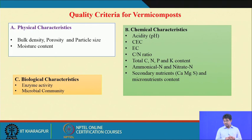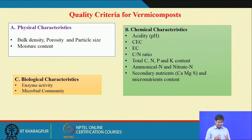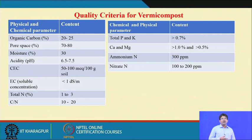For biological properties, we assess enzyme activity and microbial community. As discussed, urease activity and phosphatase activity are enzymes present in vermicompost. Microbial counts of beneficial microbes and their populations make vermicompost a healthy organic fertilizer better suited for field application and crop nutrient uptake.